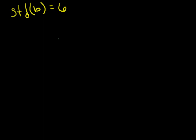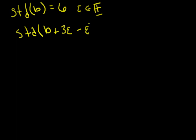Let's say that we know the standard part of some symbol — the standard part of B — is equal to 6. I don't know what B is; it's some hyperreal number, but I do know that it's infinitely close to 6. And let's say that epsilon is an infinitesimal. Then let's look at the standard part of B plus 3 epsilon minus epsilon squared.